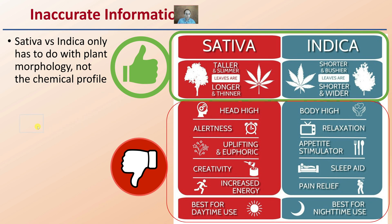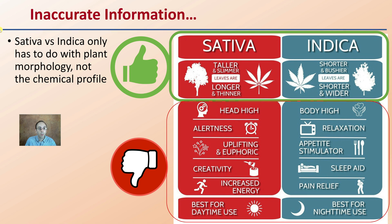Keep in mind that indica and sativa only have to do with plant morphology and not chemical profile. Taller, slimmer plants with longer leaves are sativas; shorter, bushier, wider plants are indicas. When talking about head highs versus body highs, sleep aids, creativity, daytime or nighttime use — none of this has any validity when comparing an indica to a sativa. Indica and sativa only refer to the morphology, not the chemical profile of the actual plant.